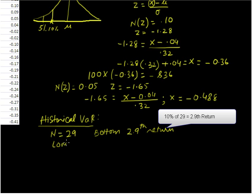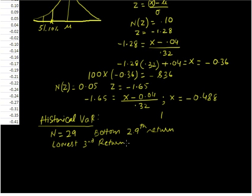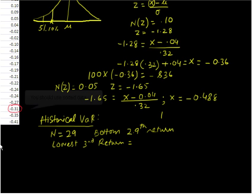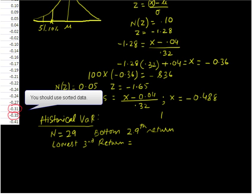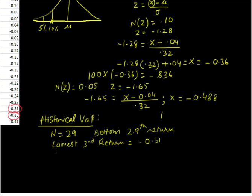Let us find what the lowest third return is, because the 2.9th return is going to be between the second and the third return from the bottom. The lowest third return is minus 0.311. The bottom second return is minus 0.35. So we are going to have to interpolate.